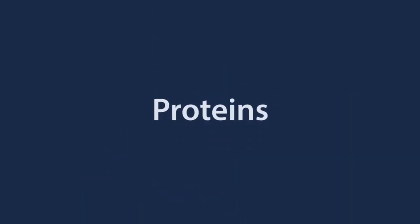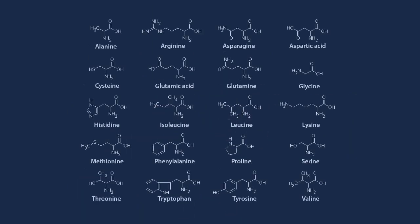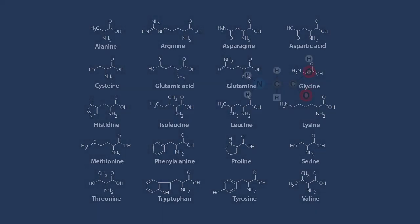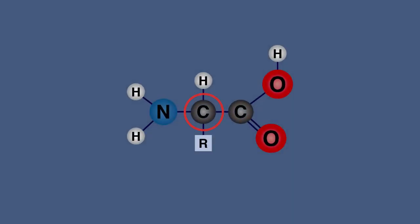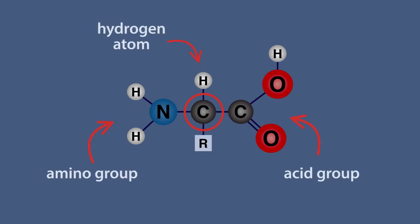Proteins are natural polymers made up of 20 different amino acids. Look at the central carbon atom. It has four different groups attached: the amino group, the acid group, a hydrogen atom, and a side chain, R. There are 20 different groups of atoms for R, for example, hydrogen, methyl, alcohol, etc.